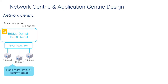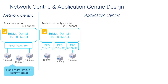Where we started — shown on the left — is where many customers still are: a deployment where each EPG is mapped to a bridge domain. This is a very simple concept that makes migration easy because you can easily take existing VLANs on an existing network and map them to an EPG and a bridge domain.